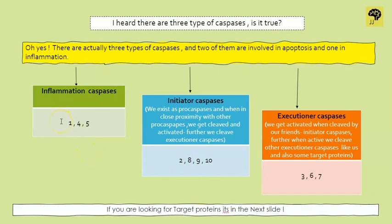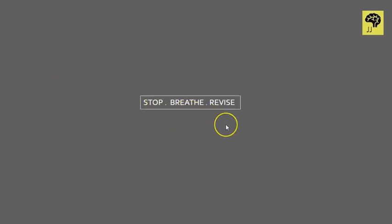It's important to know which caspase numbers belong to which class. I've arranged them in a staircase pattern to make it easy. Go downstairs: 1, 2, 3 — then jump back: 4, 5 — jump back again: 6, 7 — and in the middle: 8, 9, and 10. So: 1, 2, 3 — jump — 4, 5 — jump — 6, 7 — middle: 8, 9, 10. That's how we learn the numbering!